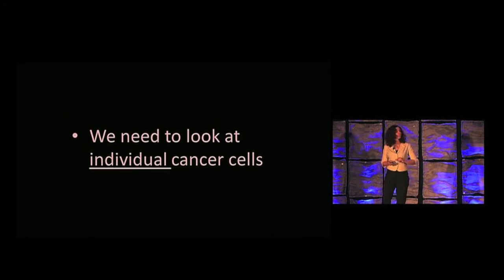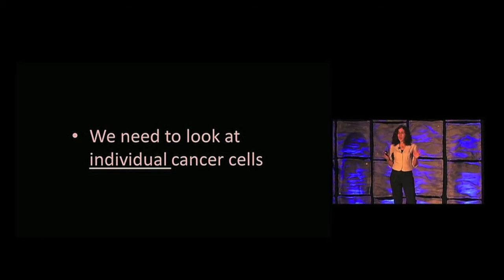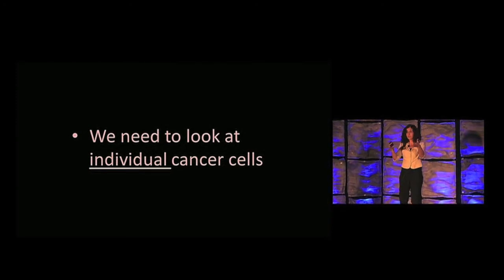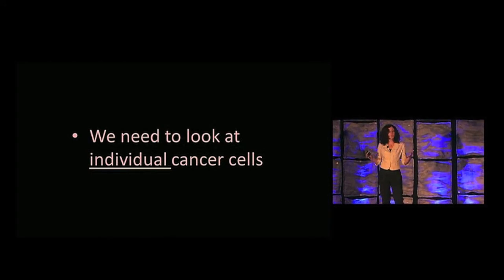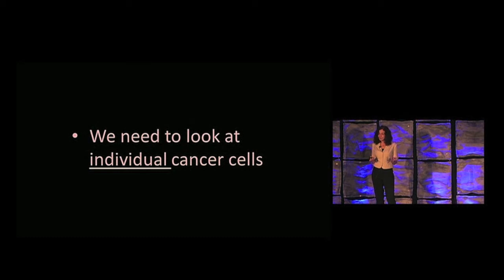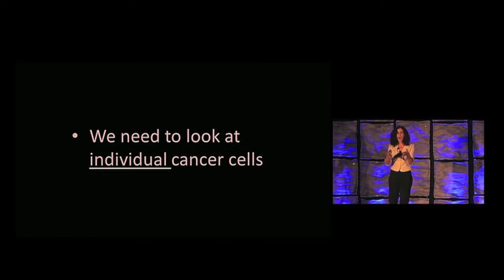Let's start with the first: we need to look at individual cancer cells. Imagine I ask you to calculate the average height of the people in this room. You'd go and measure the height of each individual, then calculate the average. Very simple, and you'd get a meaningful number — the average, the standard deviation, the distribution representing everyone's height. Now imagine I ask you to calculate the average gender in the room. That's more tricky, because gender is a binary property. You're either male or female in most cases. If we try to average binary properties, we get something in the middle that doesn't represent anyone in the room, and this can be extremely misleading.